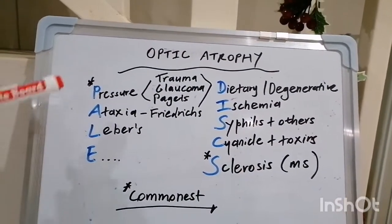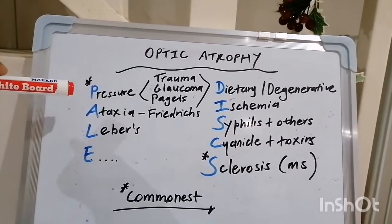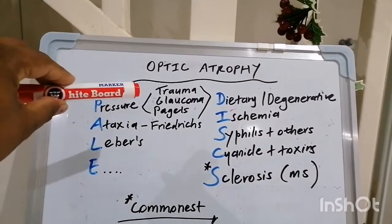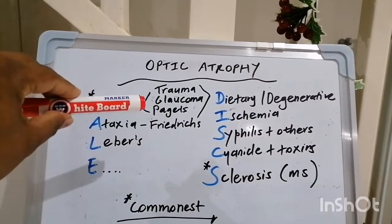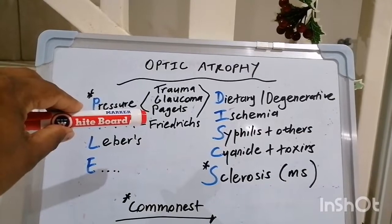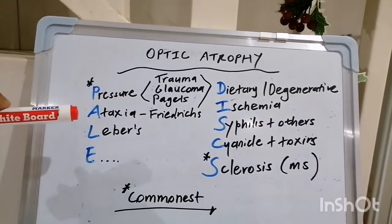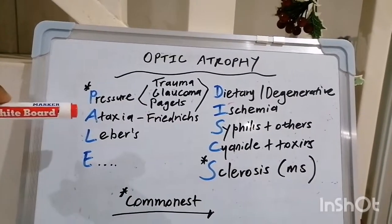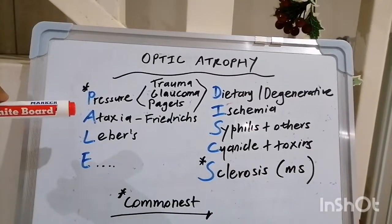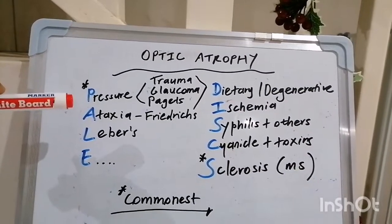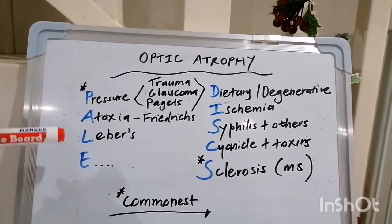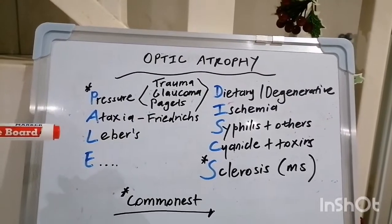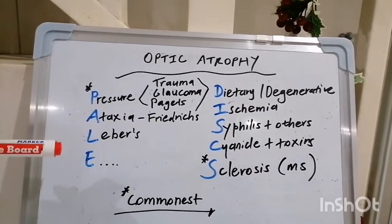To break it down: P stands for pressure — so pressure in the eye, which can be due to trauma, glaucoma, or Paget's disease. A stands for ataxia, which is Friedreich's ataxia, representing a genetic cause of optic atrophy.